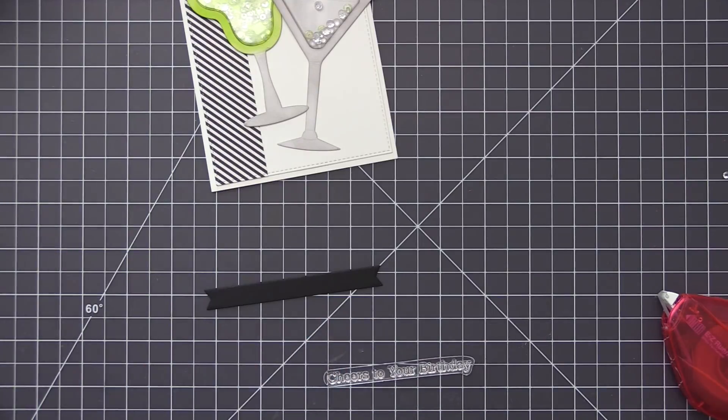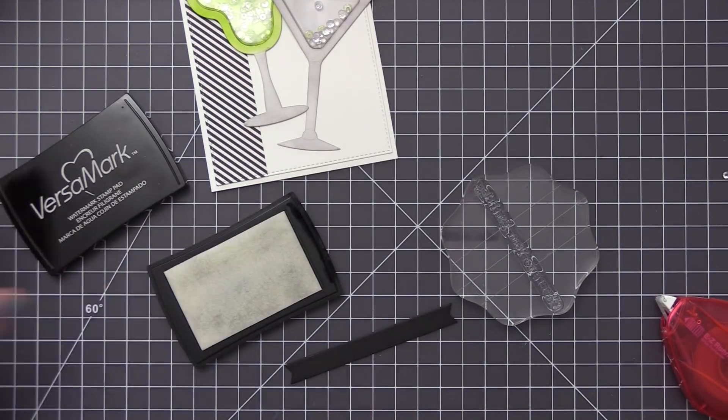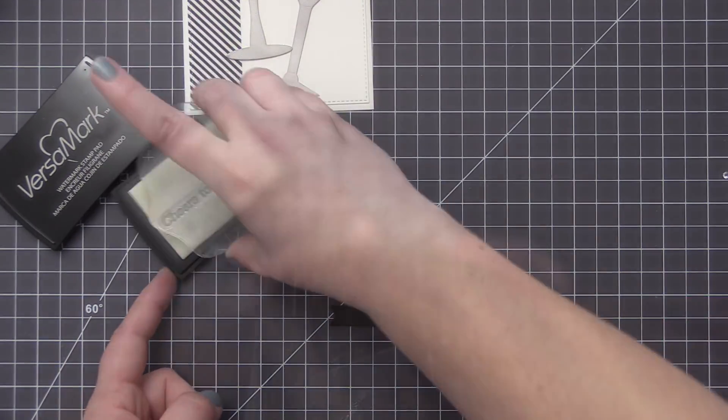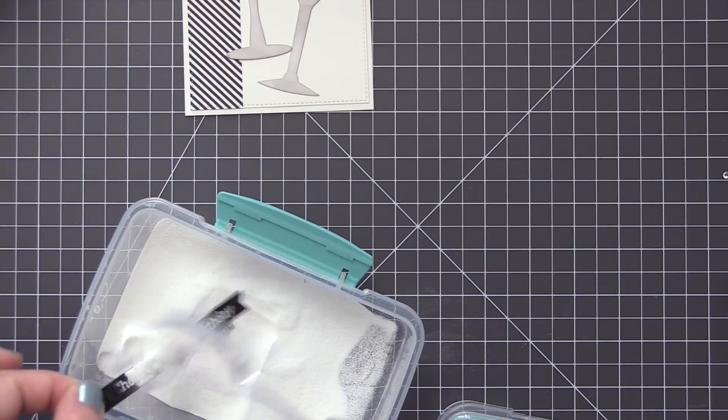This is full of sentiments that coordinate really nicely with both of these cocktail glasses. And I'm going to stamp this onto a black sentiment strip with some Versamark ink. Versamark ink is just a clear sticky ink that's going to allow us to heat emboss this with white embossing powder.